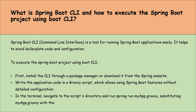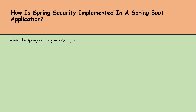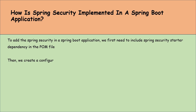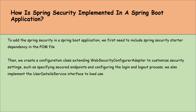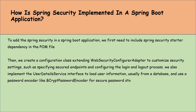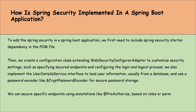Let's move to the next question: how is Spring Security implemented in a Spring Boot application? First, include the spring-security-starter dependency in the pom.xml. Then create a configuration class extending WebSecurityConfigurerAdapter to customize security settings such as specifying secured endpoints and configuring the login and logout process. Implement the UserDetailsService interface to load user information from a database and use a password encoder like BCryptPasswordEncoder for secure password storage. Secure specific endpoints using annotations like @PreAuthorize based on roles or permissions, ensuring the application manages both authentication and authorization effectively.